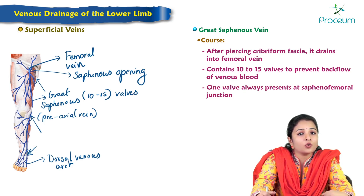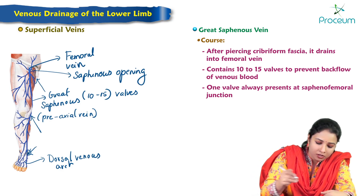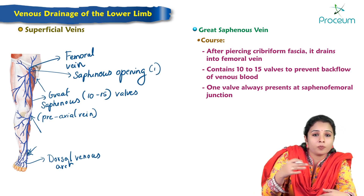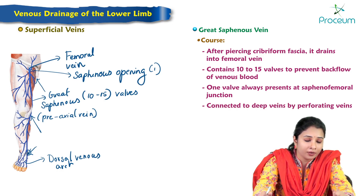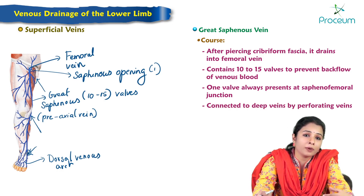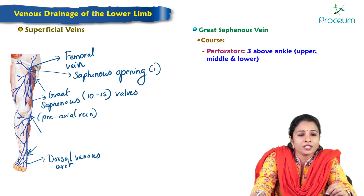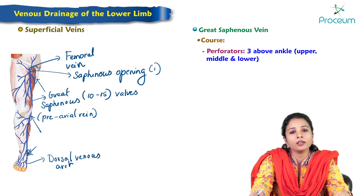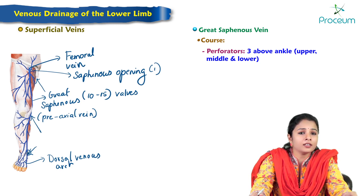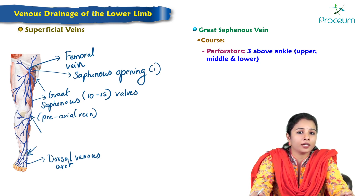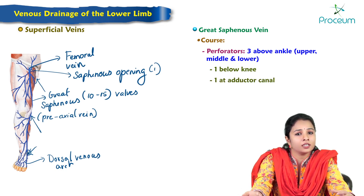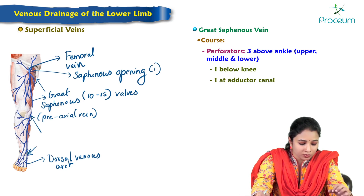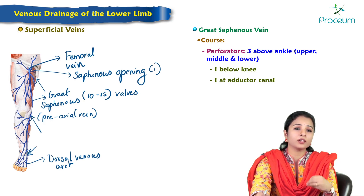One valve is always present at the saphenofemoral junction, where the great saphenous vein opens into the femoral vein. The vein is also connected to the deep veins by perforating veins. There are three perforators above the ankle named upper, middle, and lower; one perforator below the knee; and another near the adductor canal, all connecting the great saphenous vein with the deep veins.